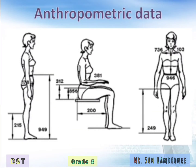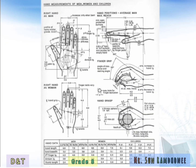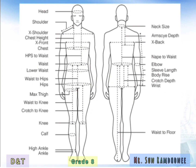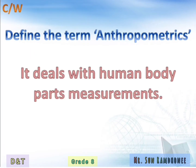We are also going to refer to anthropometric data. We see a person standing and sitting and also dimensions. Here is elaborated anthropometric data for a male and a female. We can see hand measurements of men, women, and children. Here we see the various body parts and how we call them. This book is a reference for human dimensions. Anthropometrics deals with human body part measurements.